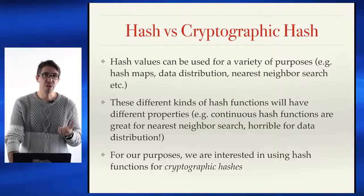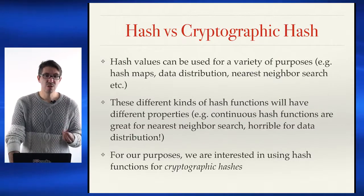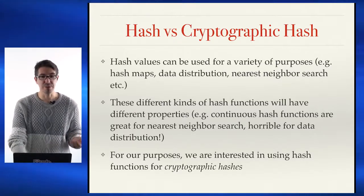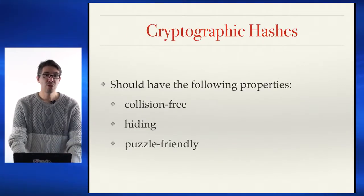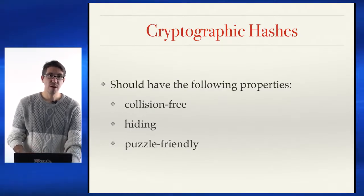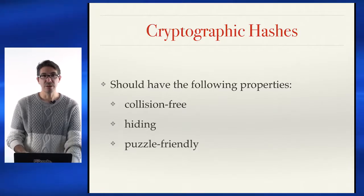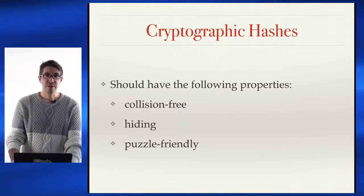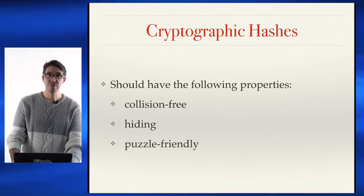In terms of blockchain technology, we're most often interested in using hash functions for cryptographic hashes, as you might expect from the name cryptocurrency. Cryptographic hashes are hash functions that have the following properties: they are collision-free or, as we'll see, collision-resistant; they're hiding; and they're puzzle-friendly.